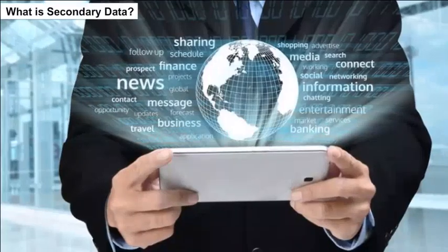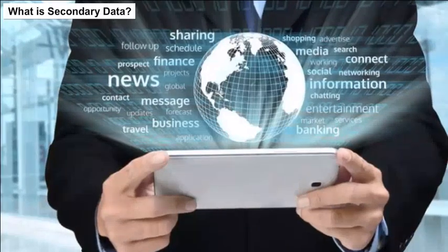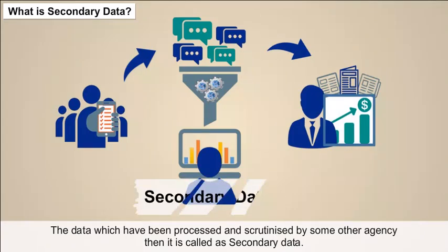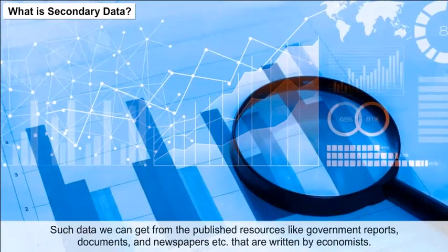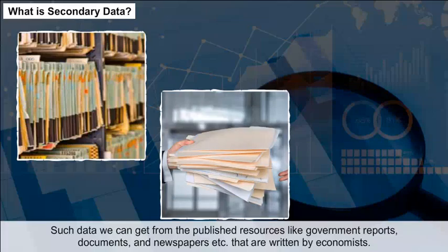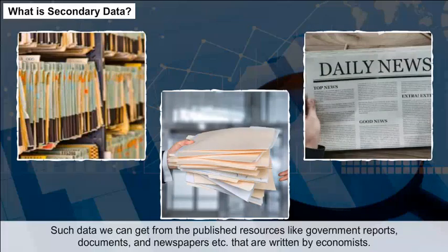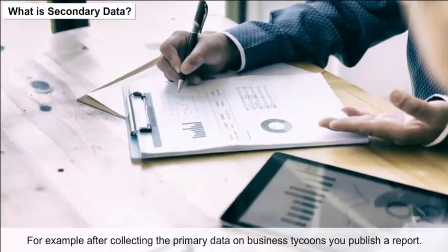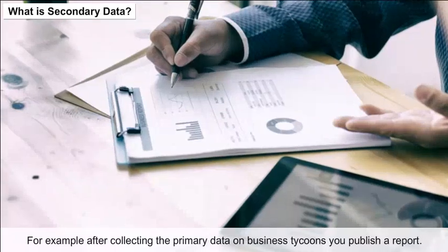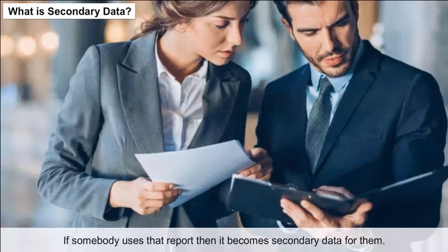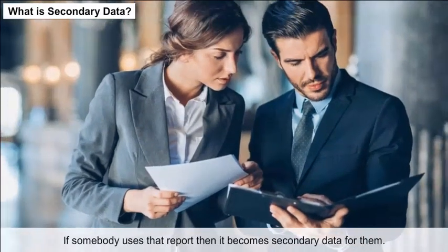Secondary data is data that has been processed and scrutinized by some other agency. Such data can be obtained from published resources like government reports, documents, and newspapers written by economists. For example, after collecting primary data on business tycoons, you publish a report. If somebody else uses that report, it becomes secondary data for them.